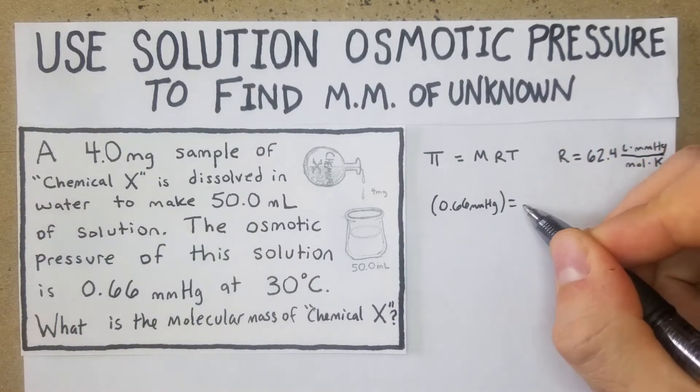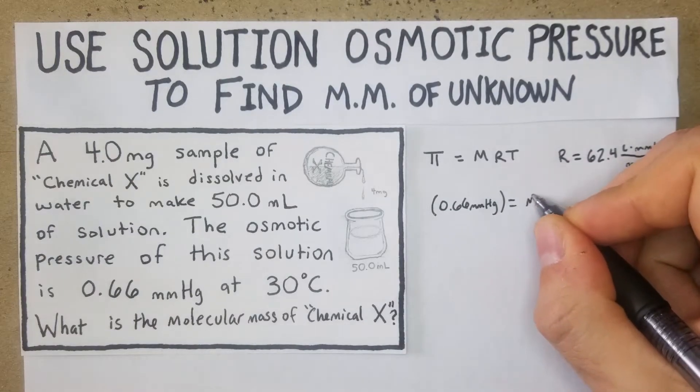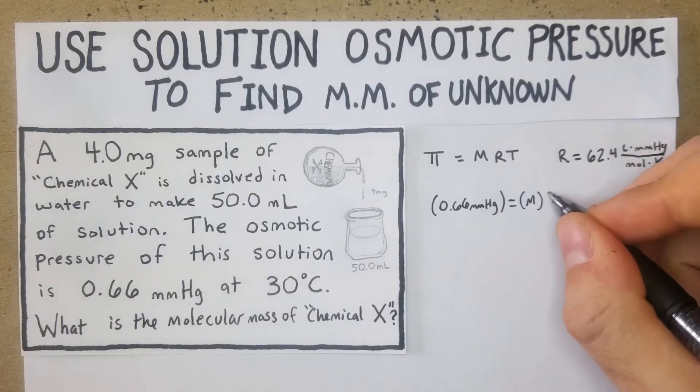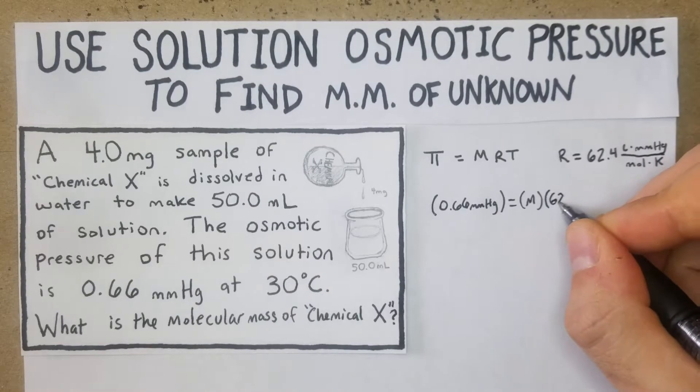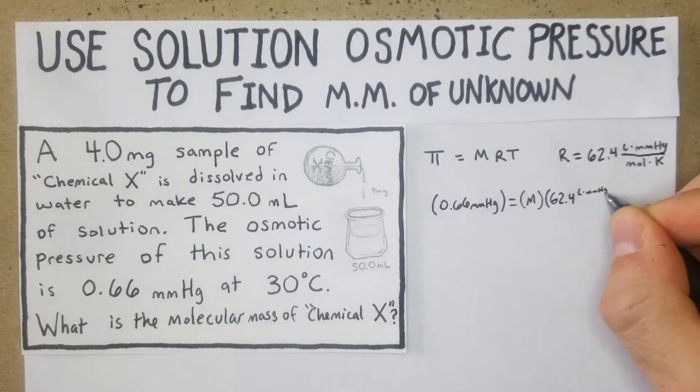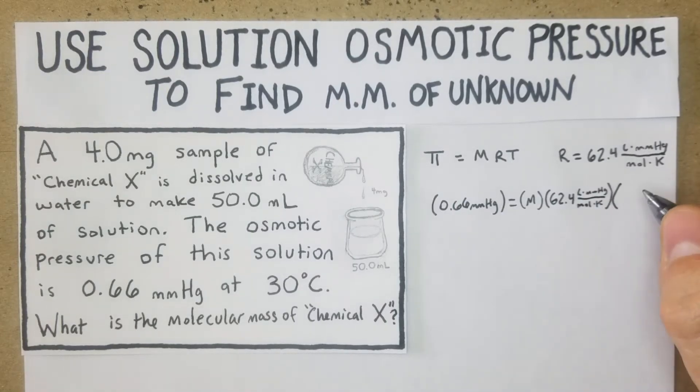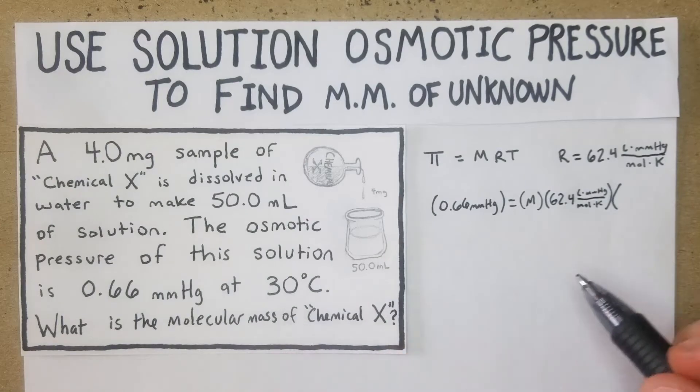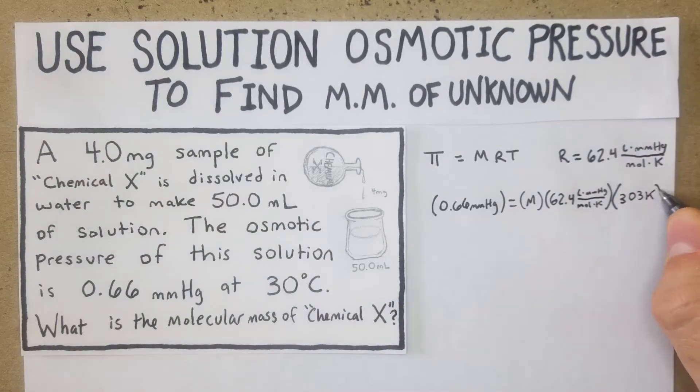Our R value is right up there: 62.4 liters times mmHg over mole times Kelvin. And then we have finally 30 degrees - we're going to put that into Kelvin so we have 303 Kelvin. Now we can just start doing some math here.